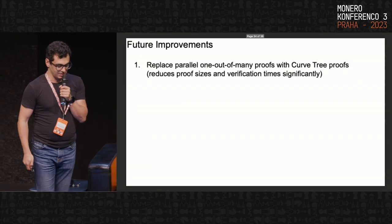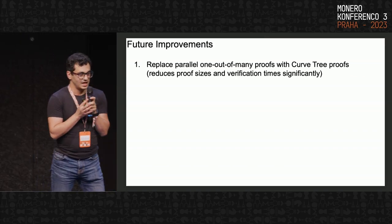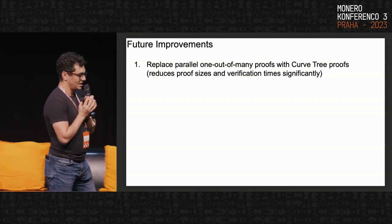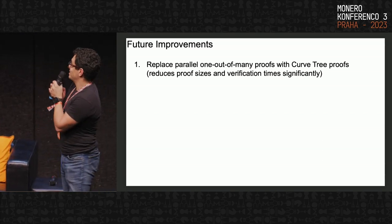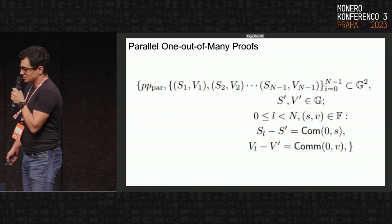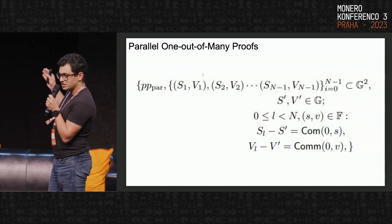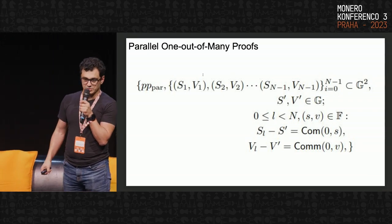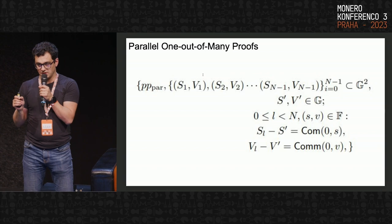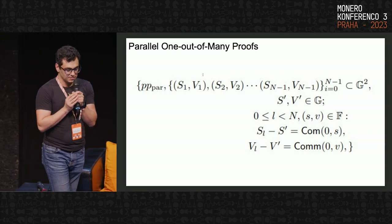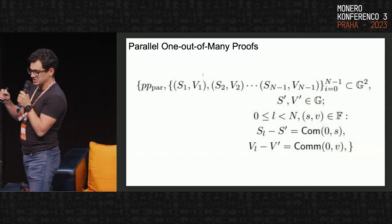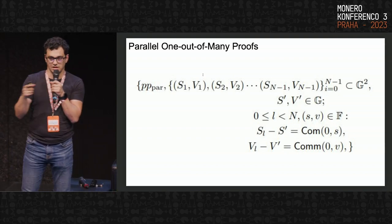Regarding future improvements, we are now looking to replace the membership proofs with more efficient proofs called curve trees, as discussed yesterday. The most computationally heavy part of a Spark transaction remains the parallel one-out-of-many proofs. They are parallel because coins are composed of two different commitments — a value commitment and a serial commitment — so we must prove that given a set of pairs of commitments and given the offset commitments, both offset commitments encode the same values as one of the pairs in the anonymity set.